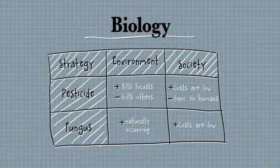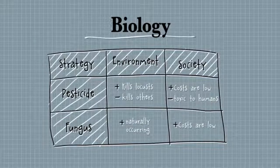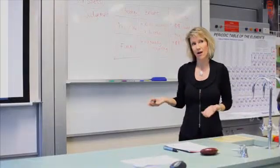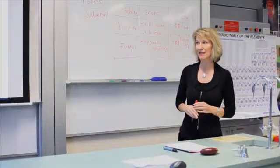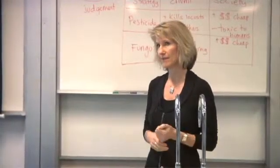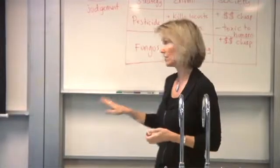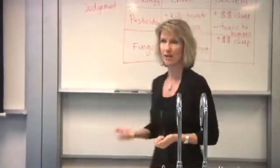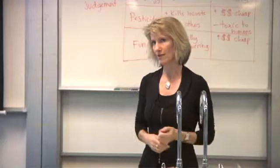For the fungus and the environment, it seems like a positive thing because it's a naturally occurring fungus — therefore it probably won't affect other species, only the locusts. So overall, when you set up your table, you can make your judgment: the fungus seems like the better option or strategy. By bringing all the information together into a simple table, you can make sure you've answered all parts of the question.